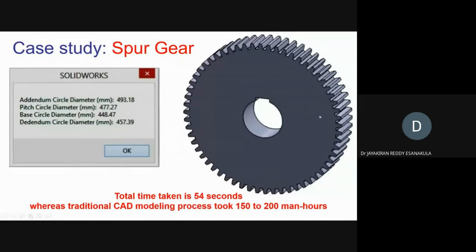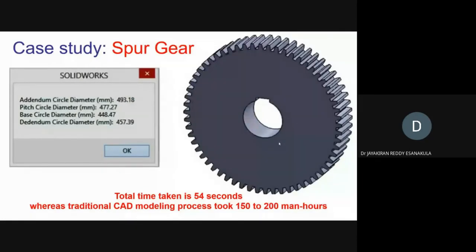If you are familiar with CAD modeling and I give you the task of drawing this CAD model in any CAD software, it definitely takes at least one hour — undoubtedly, even with errors. But if you use this system, it takes just 54 seconds to compute, calculate all dimensions, and get the CAD model. This is the main advantage. We achieved this based on advancements in computing and the knowledge-based system we developed.